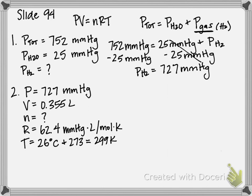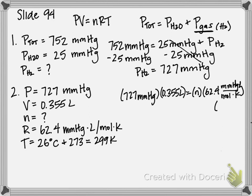So now, I can plug into the ideal gas law, PV equals NRT, solving for moles, or N in this case. So, my pressure, 727 millimeters mercury. Volume, 0.355 liters. Looking for N. Got my ideal gas constant. I'm running out of room here, so I'm going to continue. And we're also multiplying by 299 kelvin.